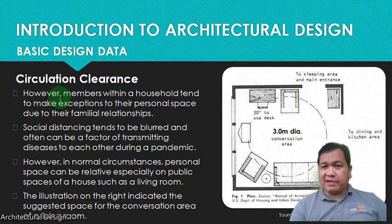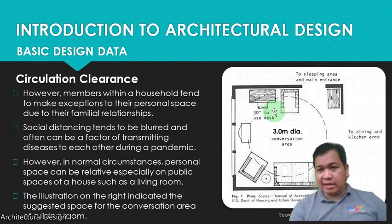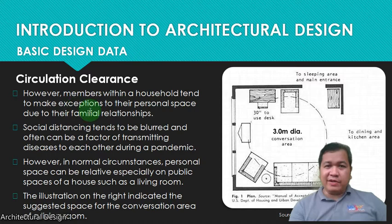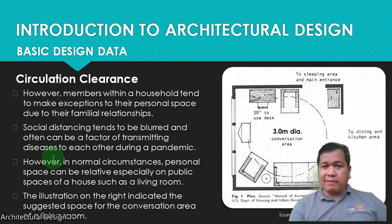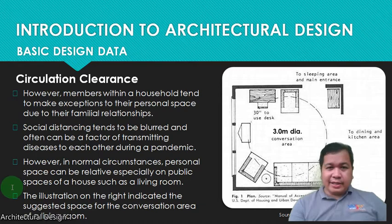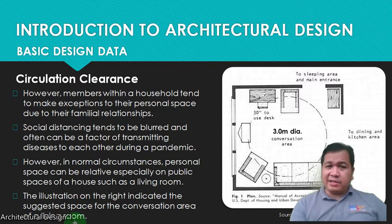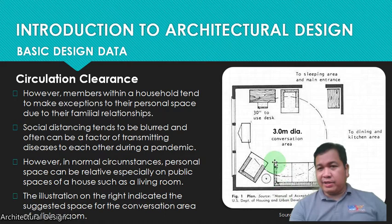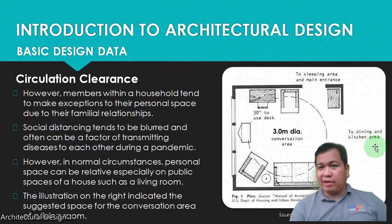This is an example of a circulation clearance with a 3-meter diameter conversation area. Members within a household tend to make exceptions to their personal space due to familiar relationships, and social distancing can be blurred — a factor in transmitting diseases during a pandemic. The illustration on the right indicates the suggested space for the conversation area of a living room, showing a sofa, chair, small circular table, and desk, with access to the dining room, sleeping area, and main entrance. Note that this plan is based on U.S. standards, so in the Philippine or Asian setting, it could be different — you have to understand the needs and wants of your clients.